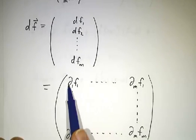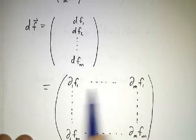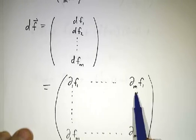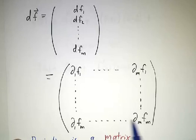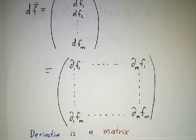So df is a matrix, where the first row is all of the derivatives of f_1, the second row is all of the derivatives of f_2, the last row is all the derivatives of f_m. A matrix, not a number, a matrix.